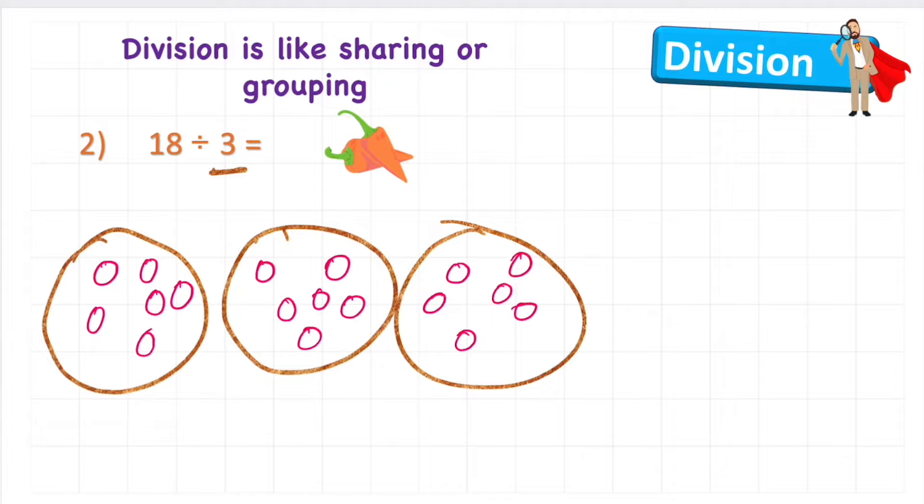Now remember there's a very important word. We need to make sure that we're dividing or sharing evenly. So I'm going to count and make sure I've got exactly the same amount in each of my sharing circles. In this one, I have one, two, three, four, five, six. In the second one, I have one, two, three, four, five, six, the same. That's good. And then one, two, three, four, five, six in my last sharing circle.